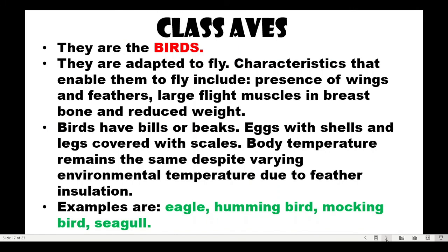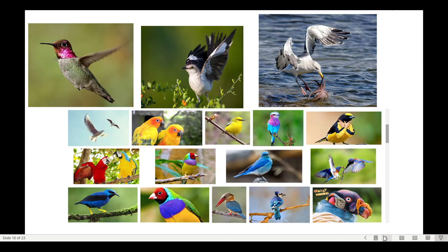Class Aves — 'Aves' means birds. They are adapted to fly. Characteristics enabling flight include wings, feathers, large flight muscles in the breast, a breastbone, and reduced weight. Birds have bills or beaks, and their eggs have shells. Their legs are covered with scales. Body temperature remains the same despite varying environmental temperature due to feather insulation. Examples are eagles, hummingbirds, mockingbirds, seagulls, and parrots.